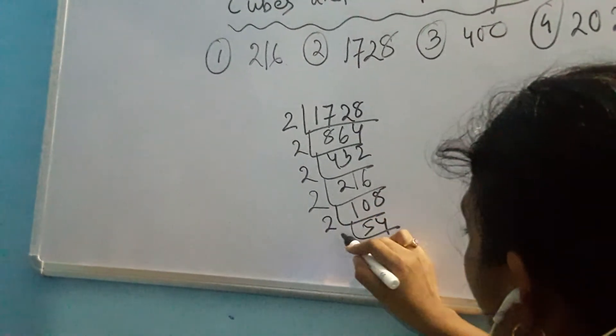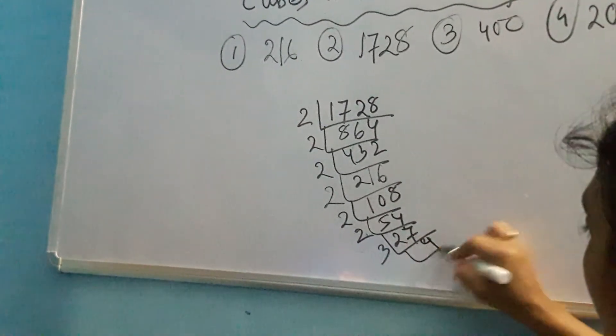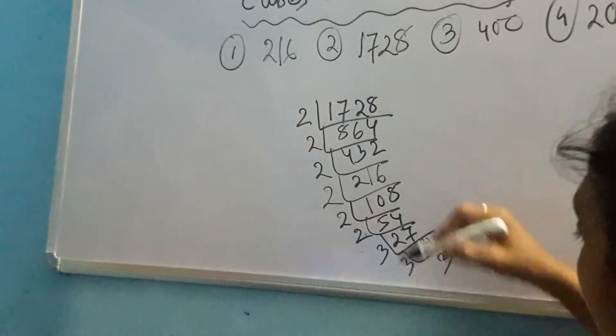Then again it is 54. Now by 3. Again 2, it is 27. Now I will do with 3. I am getting 9, again by 3.